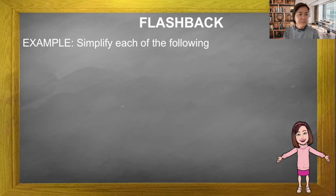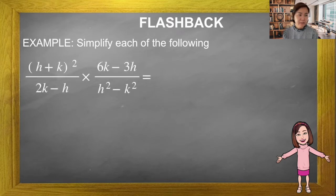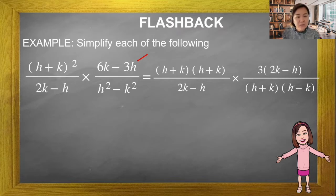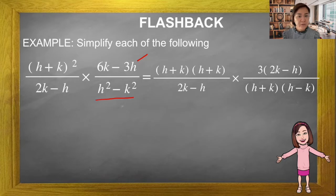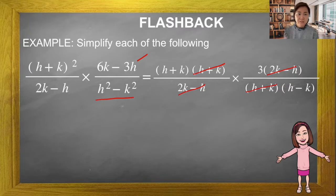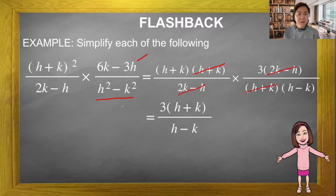Next: (h+k)² — we open the bracket to get (h+k)(h+k), then multiply by 2k minus h. For the other fraction, we factorize because we need a common factor to simplify. Since h² minus k² is a difference of squares, it becomes (h+k)(h-k). We cut (h+k) top and bottom, then multiply. Final answer is 3(h+k) over (h-k).